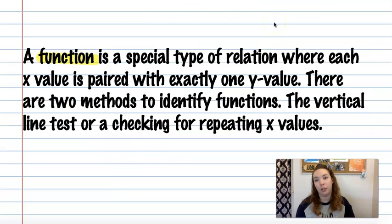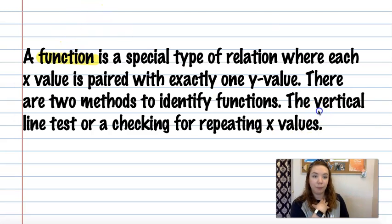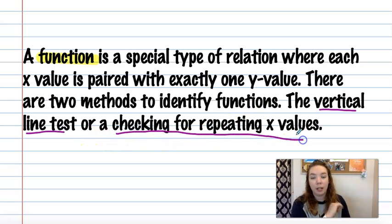Now let's get into what is a function. So all functions are relations. Relations is the bigger picture, and then a smaller section of relations are considered functions. So it's a more specific type. A function is a special type of relation where each x value is paired with exactly one y value. There are two methods to identify functions. And if we are using a graph, the easiest one to use is this vertical line test. If we are using a table, a mapping diagram, a list of points, then it's easiest just to check for repeating x values. But those are our two methods to identify functions.